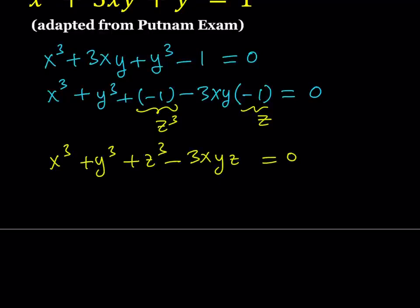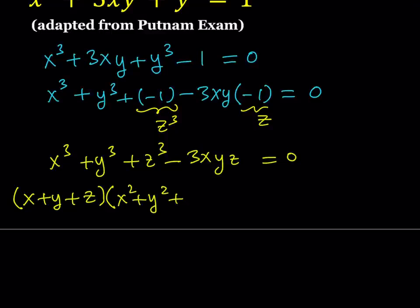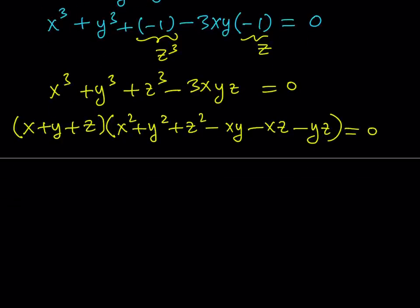Now this is a well-known identity. This expression is factorable. One of the factors is going to be x plus y plus z, so you can write this expression as (x plus y plus z) multiplied by (x squared plus y squared plus z squared minus xy minus xz minus yz). I'm not going to get into how we factor this because that's probably going to be another video.